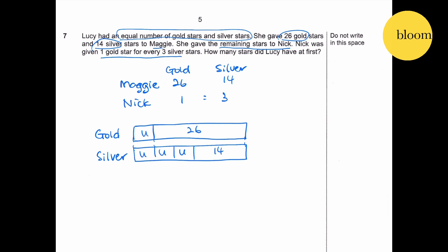So this must be 14 and 26. So we can see that 2 units plus 14 equals 26. From this, 2U equals 26 minus 14, we have 12, divided by 2, which is 6. So 6 gold and 18 silver for Nick.